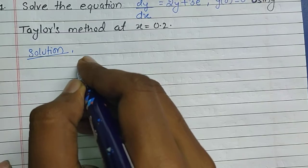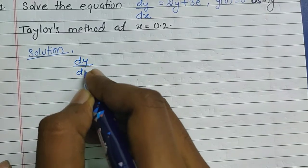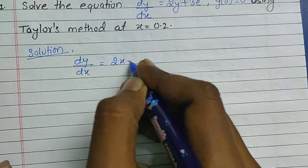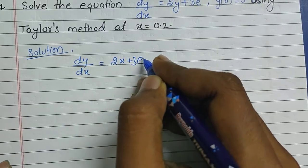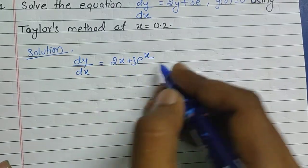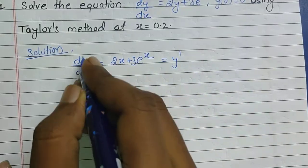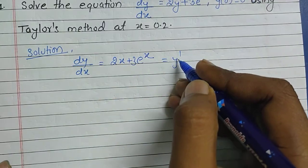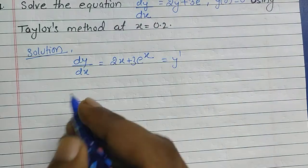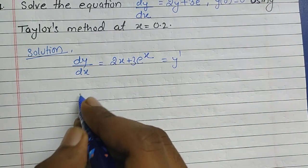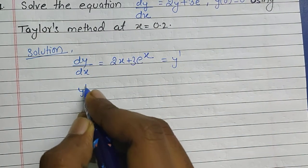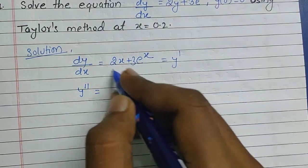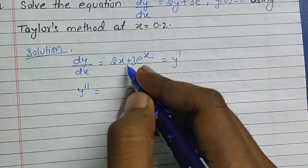We have dy/dx = 2y + 3e^x, which equals y'. We all know that dy/dx can be represented by y'. So this is our y'. The second order derivative y'' will be found by differentiating this equation.